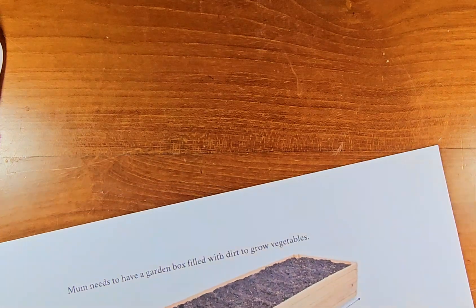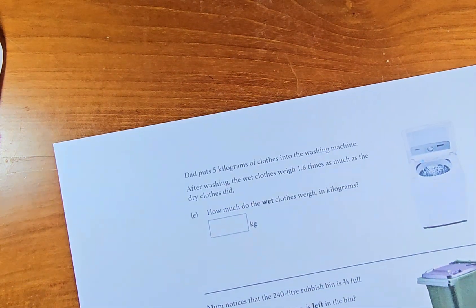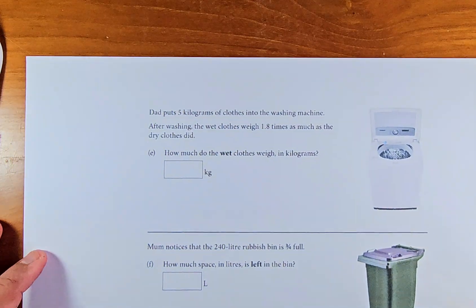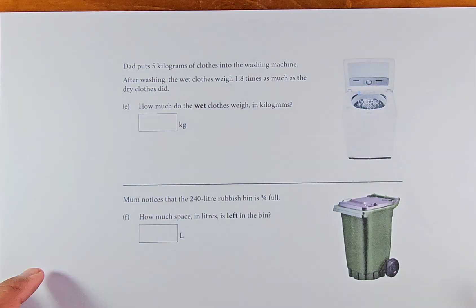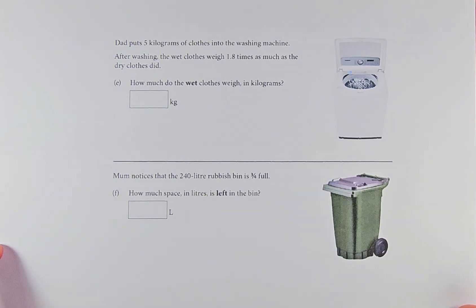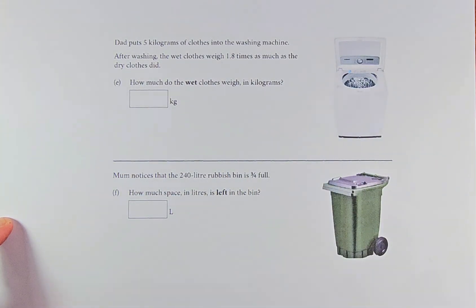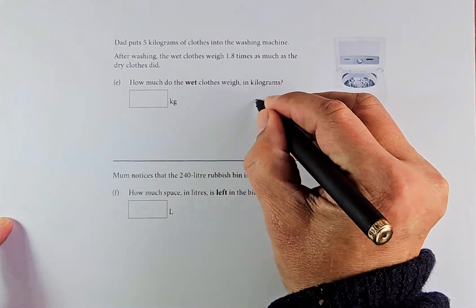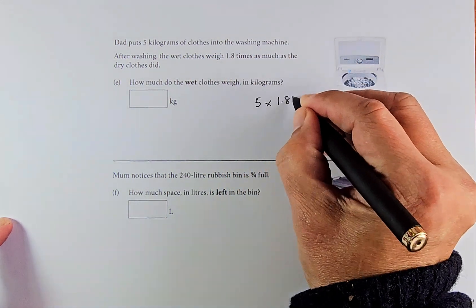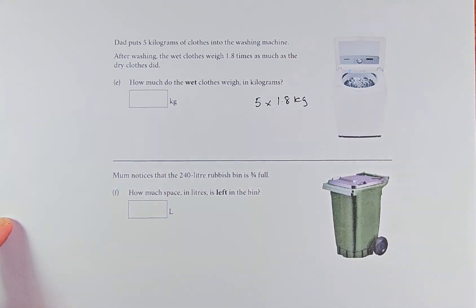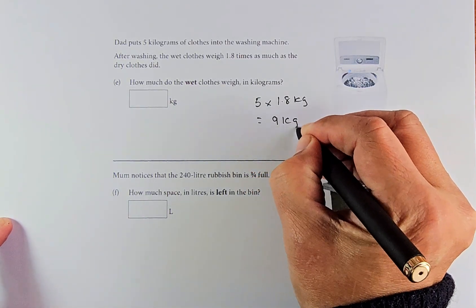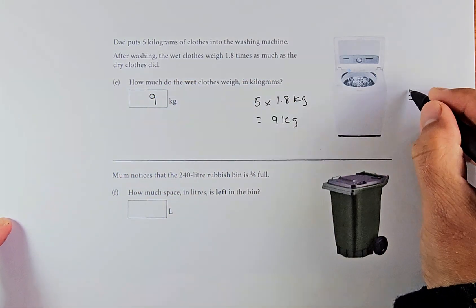The last two questions are 1e and 1f, and they are straightforward questions. 1e sounds like this: Dad put 5 kg of clothes in the washing machine. After washing, the wet clothes now weigh 1.8 times as much as the dry clothes did. So initially it was 5 kg, and after water is added, it's 1.8 times. So it's going to be 5 kg multiplied by 1.8 times. The answer is 9 kg. That is outcome number two.